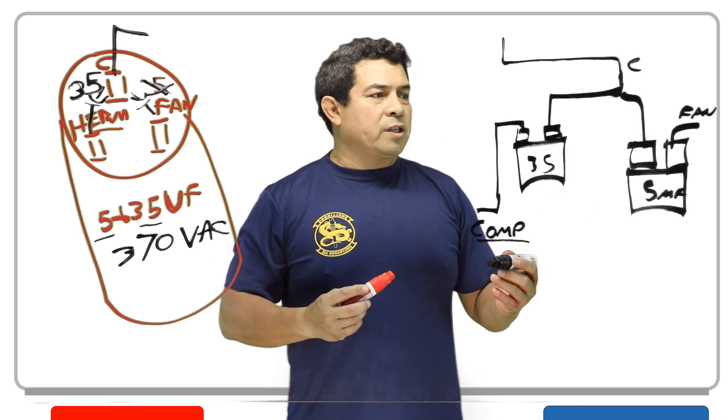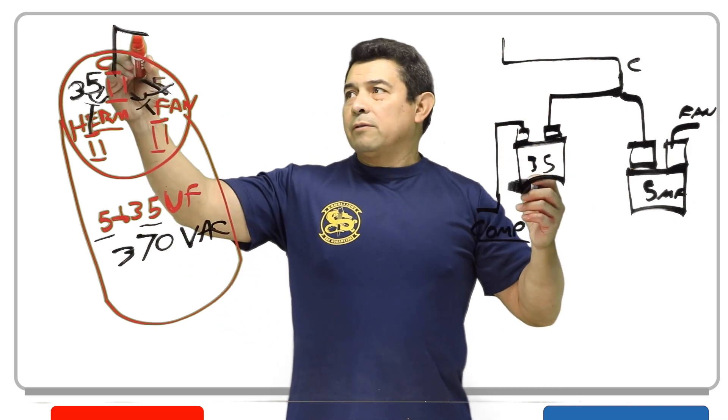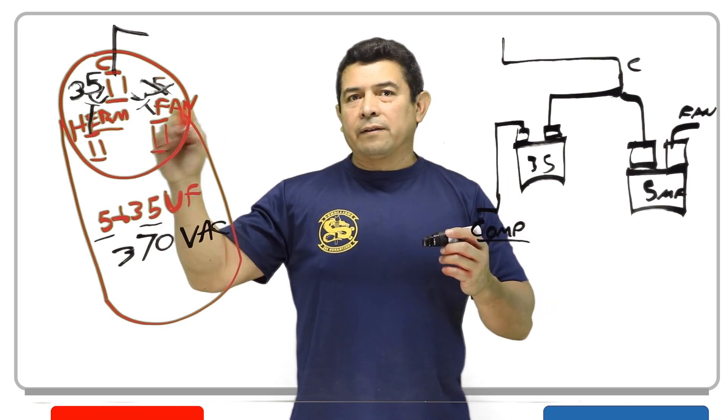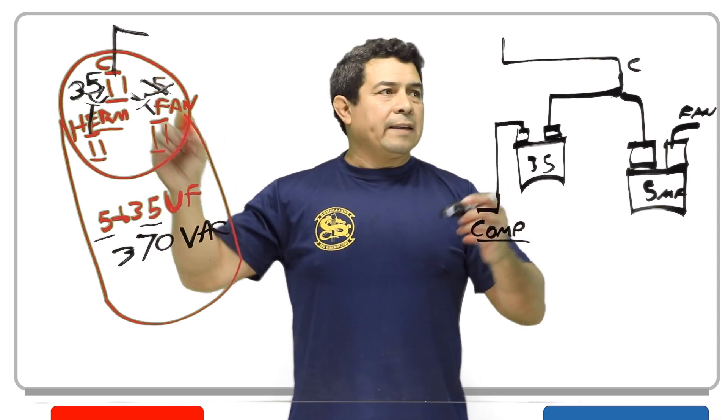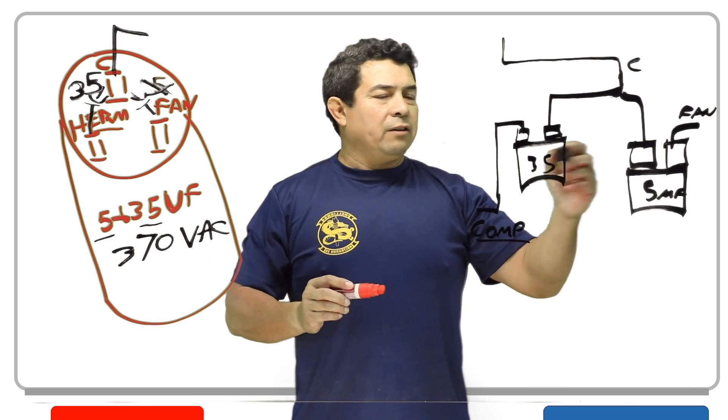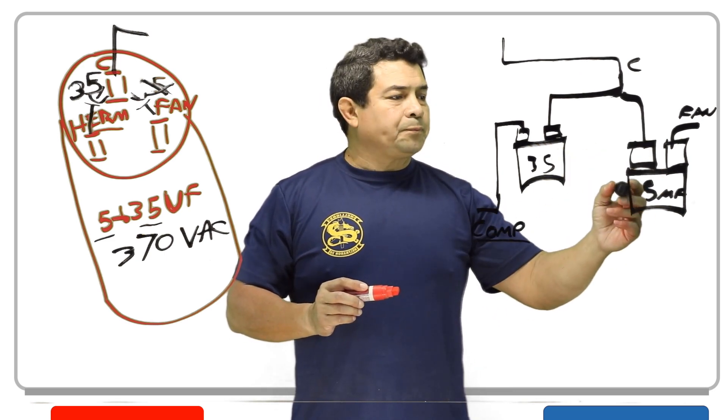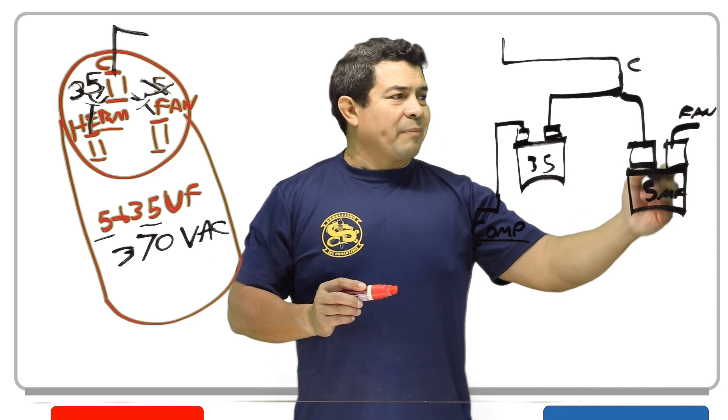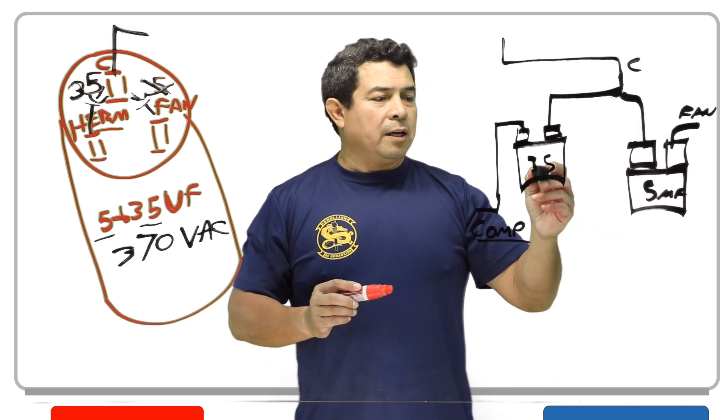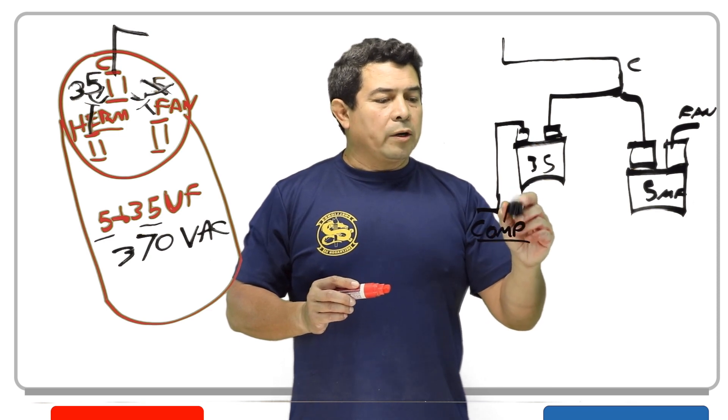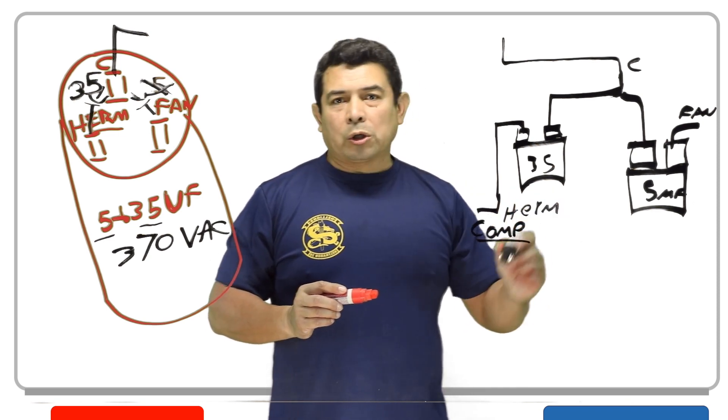And then this one will be going to our fan right there. So now, this is one choice that we have. So the same line up here that's feeding the two capacitors that are inside of this capacitor, we're going to take that line, split it up, and feed the two capacitors right here. Then, this one, the 5 microfarad will go to the fan, and then the 35 will go to the compressor or where it used to say herm, like this.